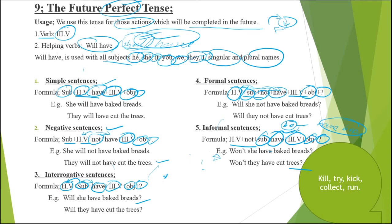As usual, now we will practice. Previously we completed 40 sentences and today we will include 5 more, so 40 plus 5 equals 45 sentences. We will practice with five corner verbs: kill, try, kick, collect, and run. Let's begin the practice.